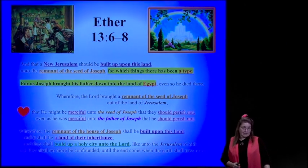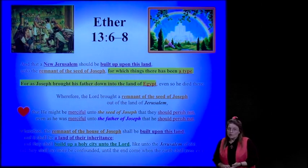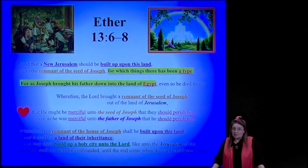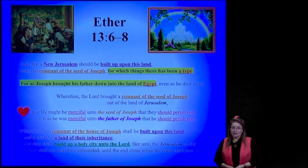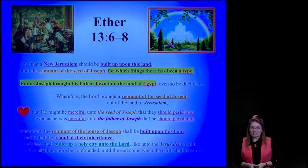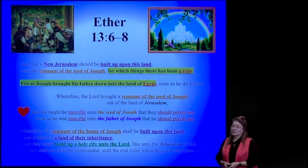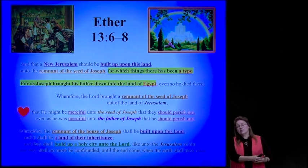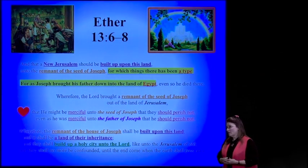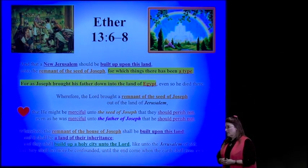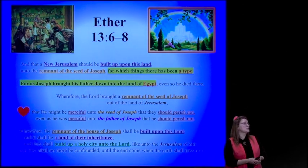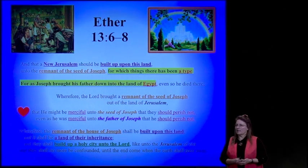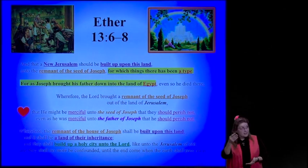Ether 13 tells us: 'For as Joseph of Egypt brought his father down into the land of Egypt, wherefore the Lord brought Lehi and his family out of the land of Jerusalem, a remnant of the seed of Joseph, that he might be merciful unto the seed of Joseph, that they would perish not.' Just as Joseph was brought into Egypt to save his father Israel and their families, the house of Joseph was brought to this land to be a savior in the end time of the world. This is a type.